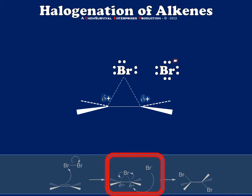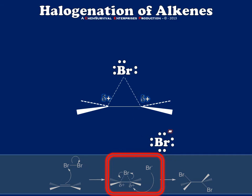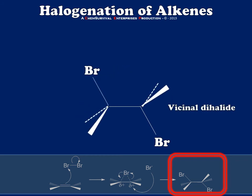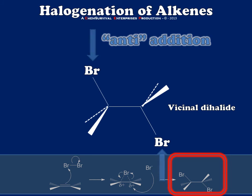cannot attack the cyclic bromonium ion from the same side because of the steric obstruction from the bromine that's already there. Instead, in order for my nucleophile to attack, it's going to have to make its way around to the opposite side of the molecule and attack from that side. When it does this, I'll get my new carbon-bromine bond and I'll break that cycle of the bromonium ion to create something called a vicinal dihalide. So what's important about this mechanism is that my bromines have attacked from opposite sides of the molecule in what we would call an anti-addition. Although it may not seem important now because of the simple symmetrical alkene I chose, you can imagine that as things begin to get more complicated, that regiospecificity and stereospecificity will start to come into play.